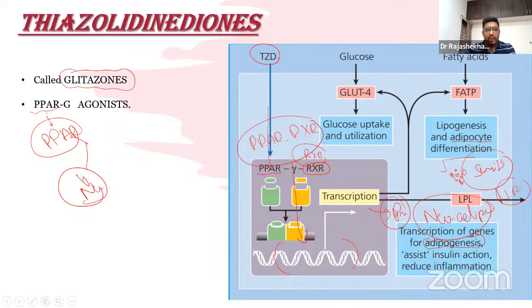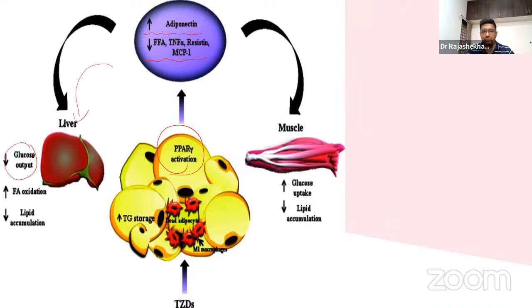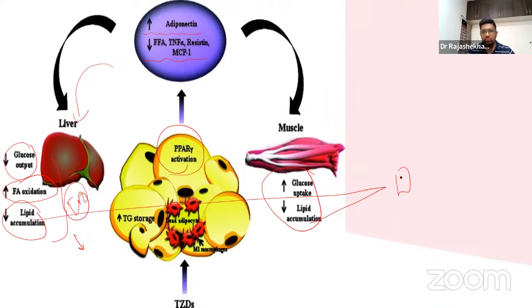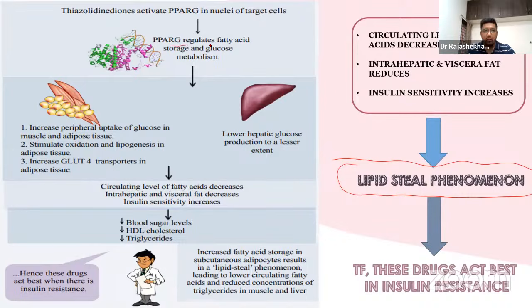The only TZD currently in use is pioglitazone. At the molecular level, PPAR-gamma activation increases adiponectin secretion and decreases free fatty acids, resistin, and MCP-1, ultimately reducing hepatic glucose output and increasing fatty acid oxidation. This causes a lipid redistribution — a 'lipid steal phenomenon' — shifting fat from visceral/hepatic stores to subcutaneous adipose tissue, improving hepatic insulin sensitivity.